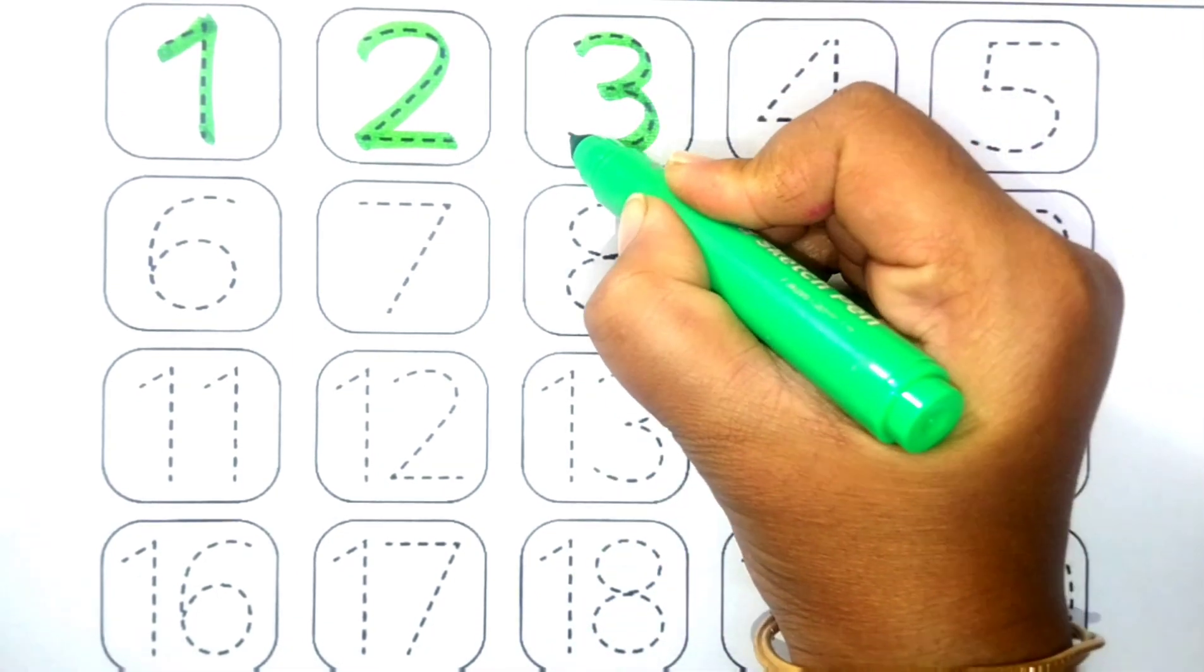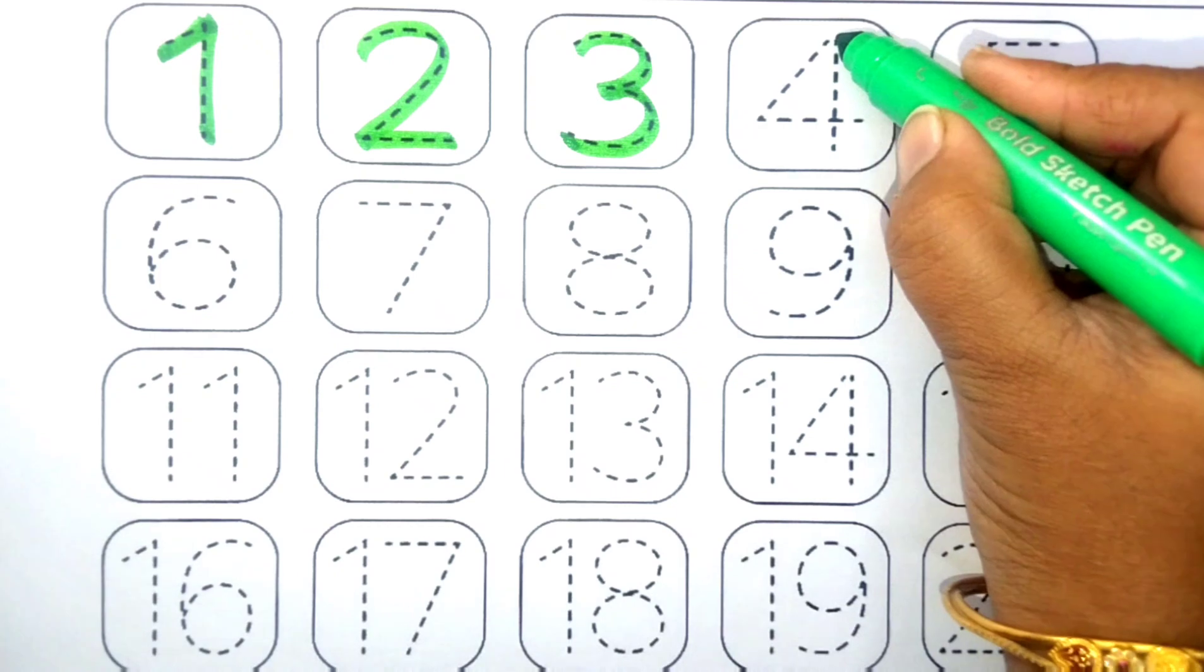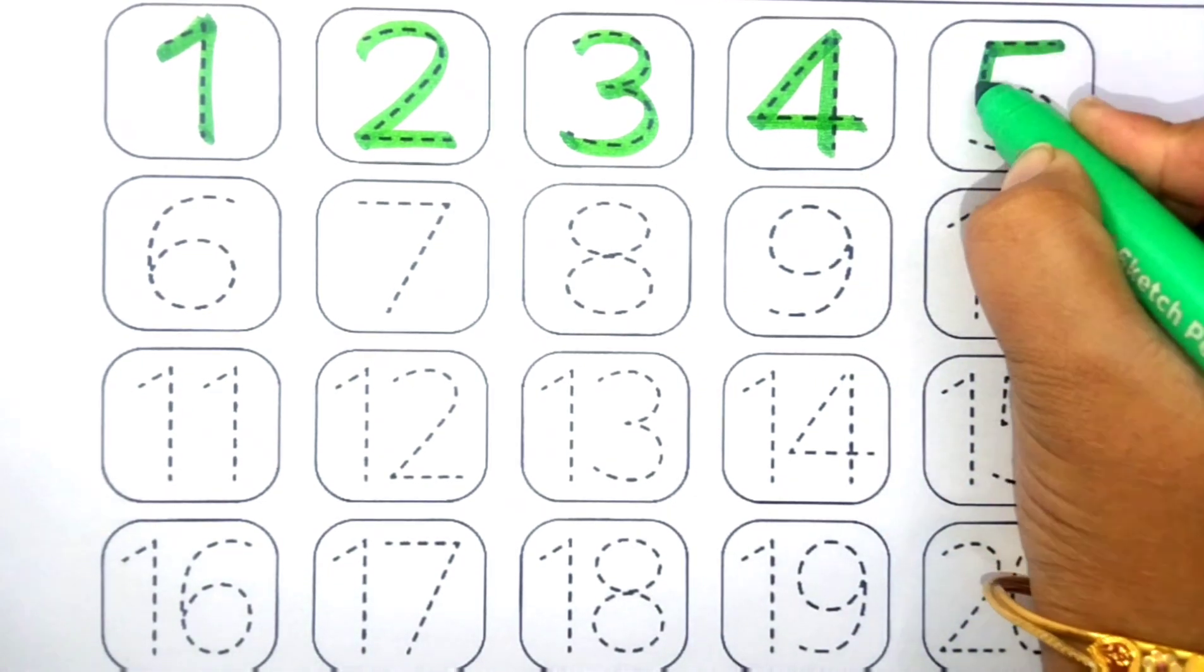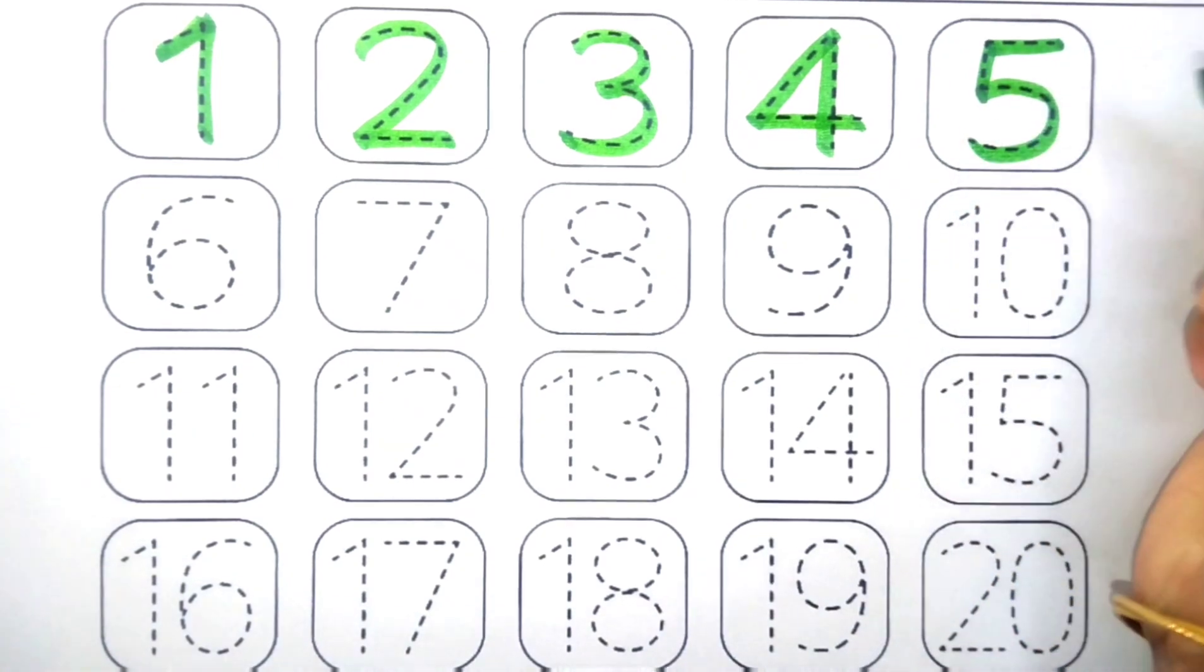3. 3 means teen. 4. 4 means char. 5. 5 means paanch.